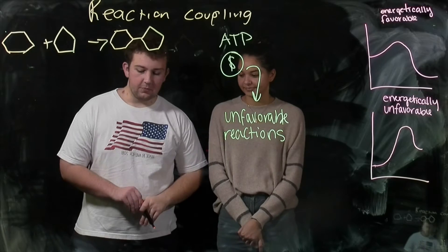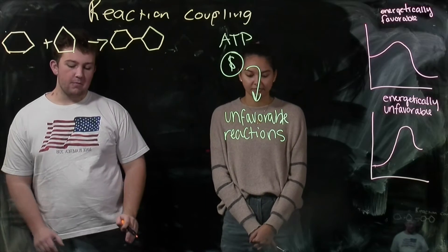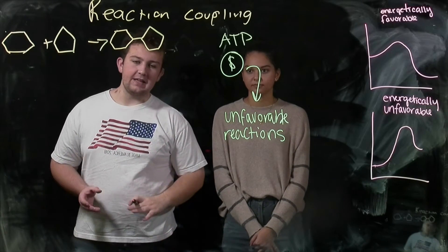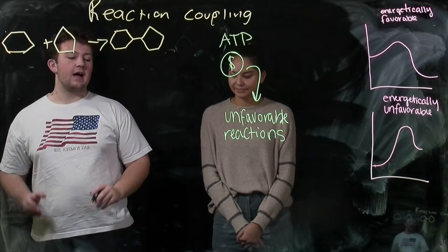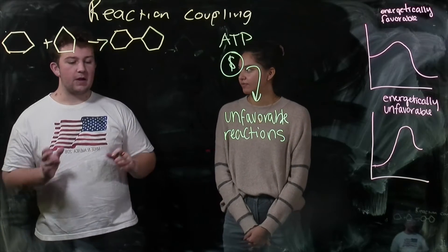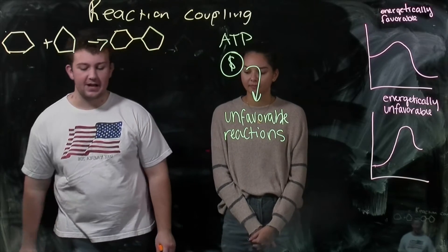So reaction coupling is where ATP forms together with another molecule to make a molecule that more easily reacts, and this is called an intermediary molecule, with the other original input to create your output without supplying as much energy into a single reaction.